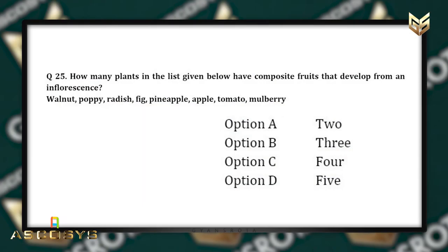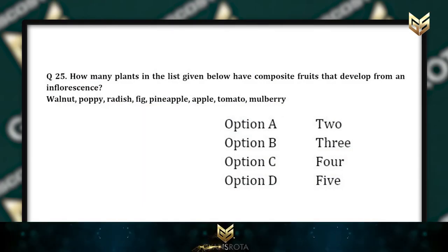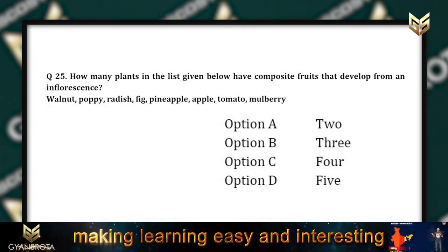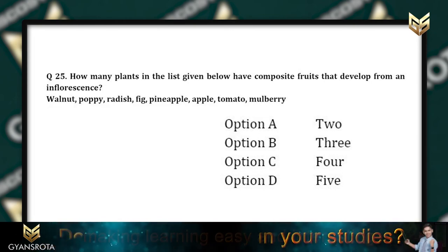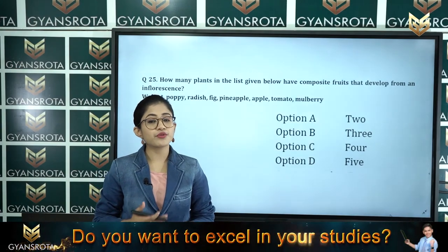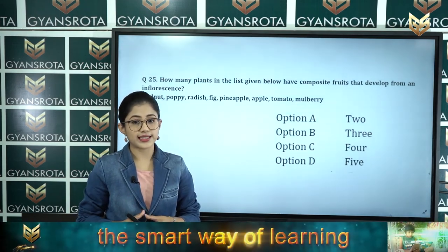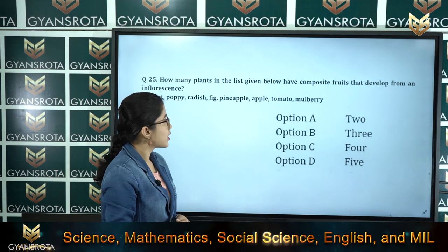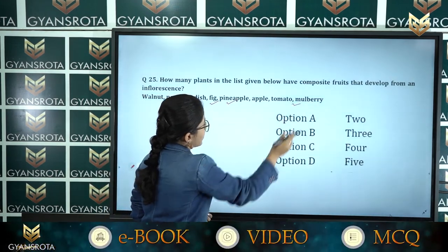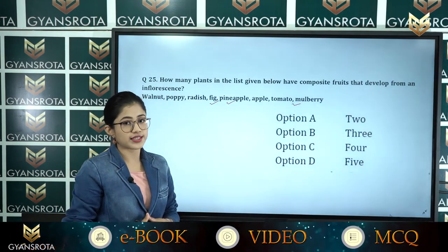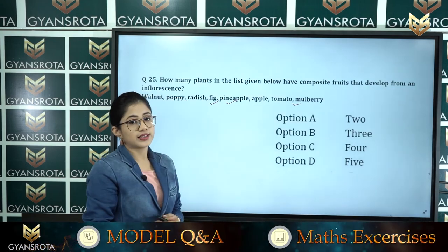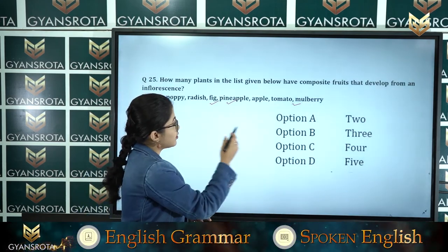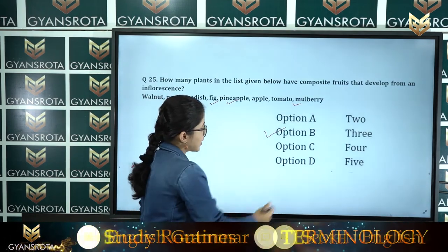Question number 25: How many plants in the list have composite fruits that develop from an inflorescence? The list includes walnut, poppy, radish, fig, pineapple, apple, tomato, and mulberry. Fig, pineapple, and mulberry are composite fruits that develop from an inflorescence — that gives us three examples. So option B (3) is the correct answer.